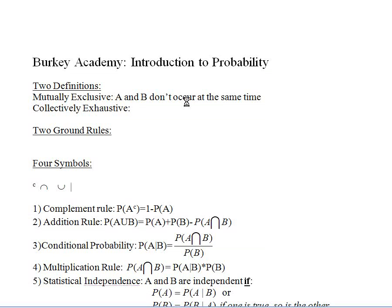Briefly, A and B, or it could be A, B, and C, they are collectively exhaustive if all cases can be put in either A or B, or possibly both. Everything is A or B, or both.